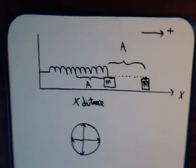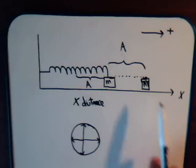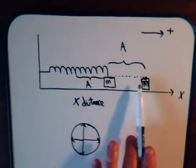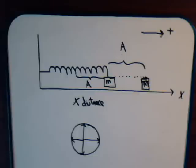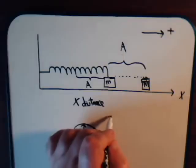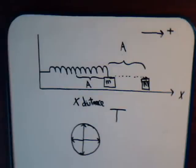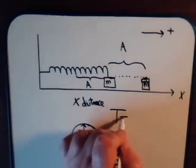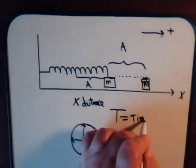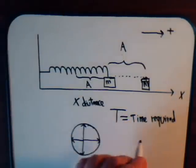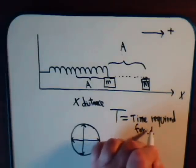Let's say that the time it takes to complete one cycle — starting from the initial stretched position, going all the way to its maximum compression, then all the way back to its starting position — that is one cycle. The time it takes to complete that is called the period, represented with a capital T. So T is the time required for one cycle.